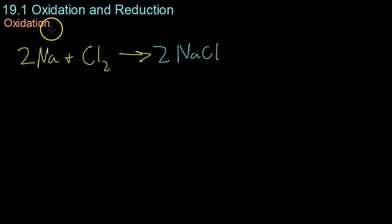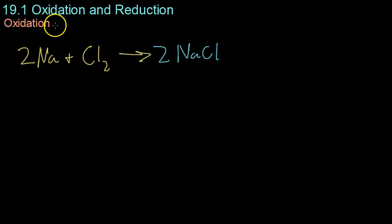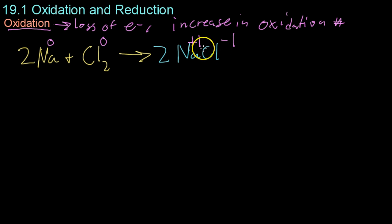We'll begin our look at oxidation and reduction with oxidation, which once again is the loss of an electron or an increase in oxidation number. If we look at the below reaction, the reaction of sodium with chlorine to form common table salt, sodium chloride, let's write the oxidation numbers. Elemental compounds always have zero as their oxidation number. And then in this ionic compound, sodium has an oxidation number of plus one and chlorine has an oxidation number of negative one.